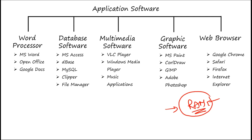First type of application software is word processors. A word processor is a program that creates text-based documents. These applications have many features allowing you to write, edit, and format documents. Basic features include formatting text, making it bold, underline, creating tables, headers, and footers — all things we do using MS Word. Many programs also help correct spellings and grammar mistakes.